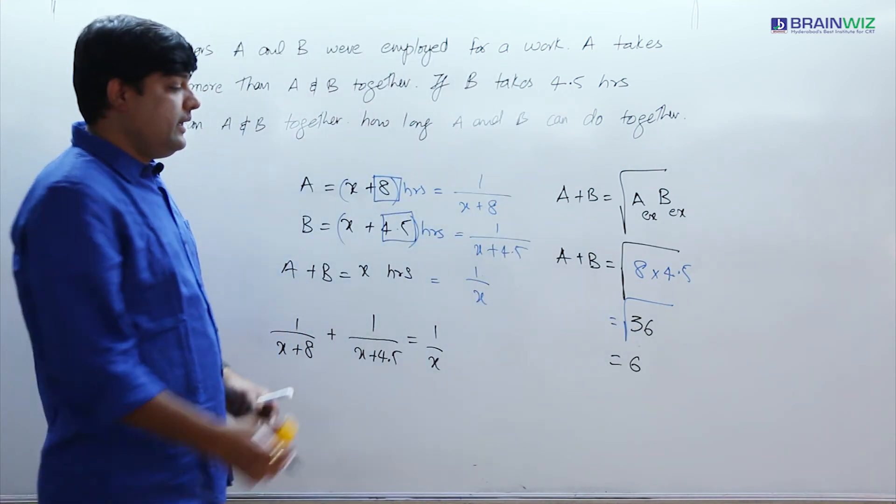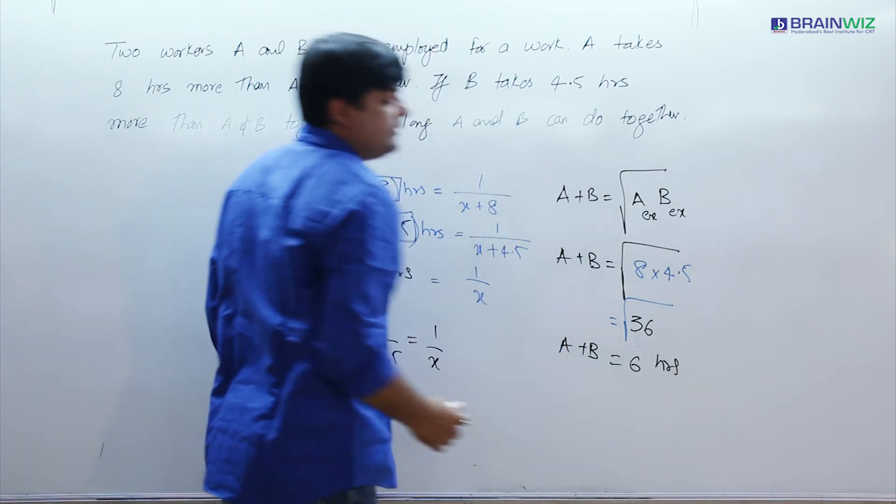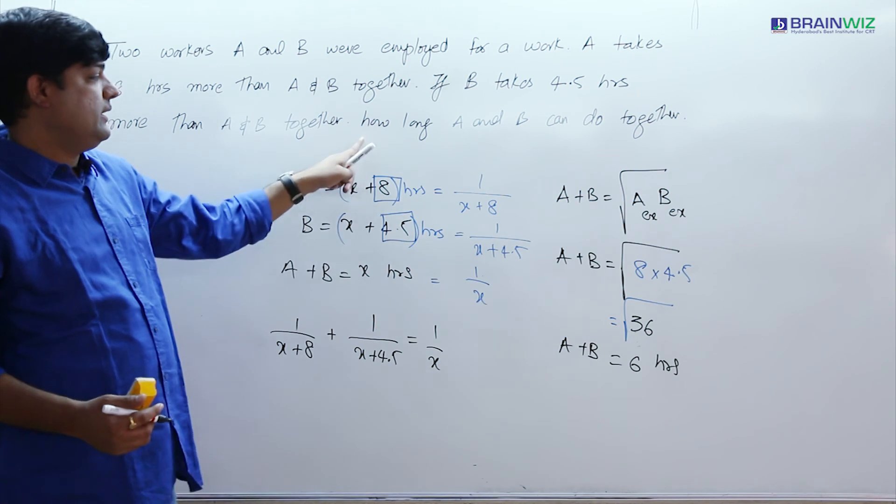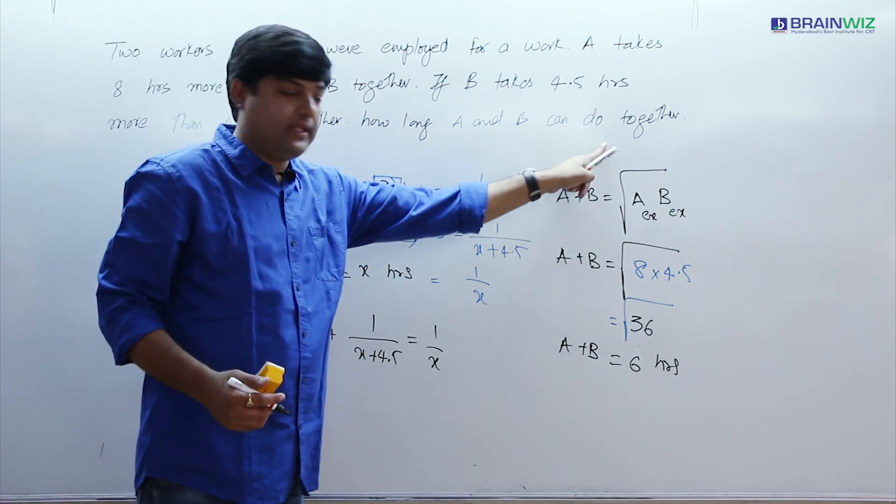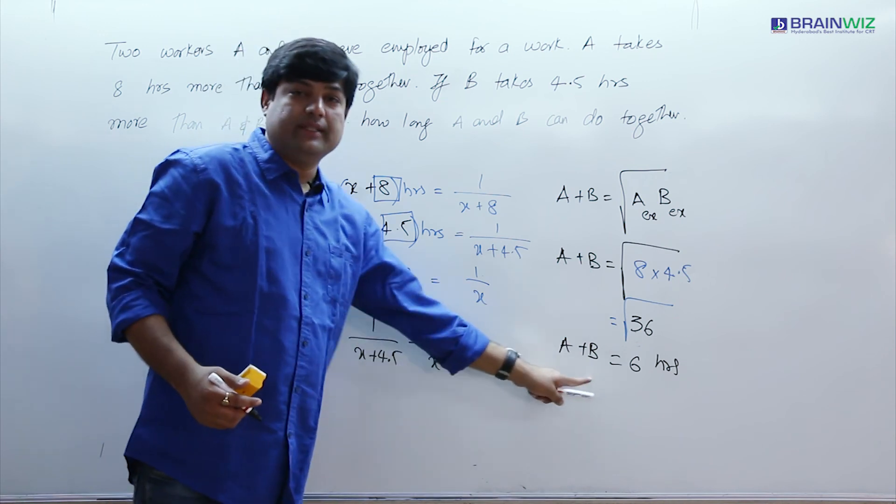So we can understand that A and B together use 6 hours to complete the work. How long A and B can do it together? So they will do together 6 hours.